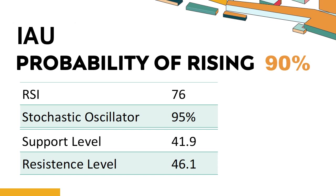The current stochastic oscillator of IAU is 95%. When the stochastic oscillator rises above the 80 level, it is usually considered overbought, indicating that the stock may be due for a price pullback. An overbought condition occurs when a stock's price rises too fast and too high in a short period of time and can be a sign that buying pressure has exhausted.